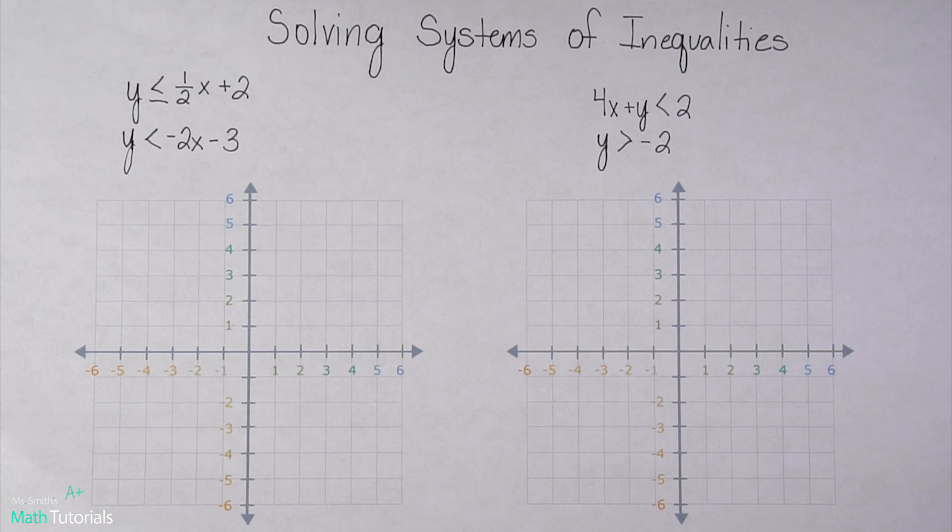So it's very similar to systems of equations solving using graphing, only now we're doing inequalities and there's a little more to it. If you think back to when we were graphing inequalities in unit two, it's very similar in that we have to worry about our dotted or solid line, and are we shading above or below. So it's really just putting together that lesson on graphing inequalities in general and systems of equations using graphing.